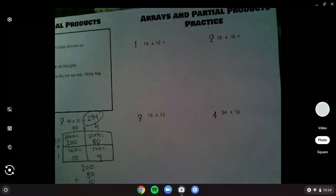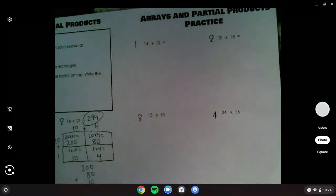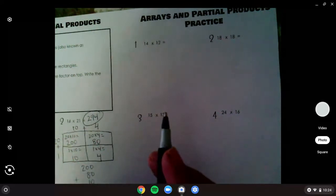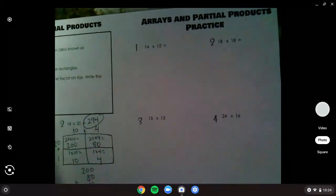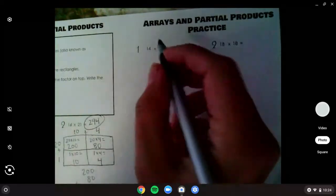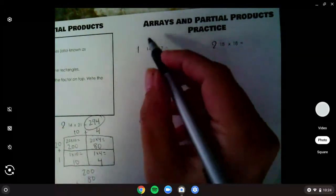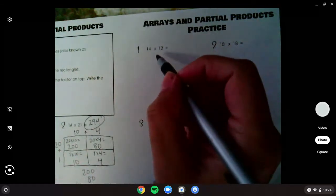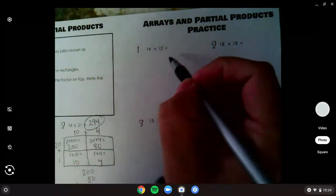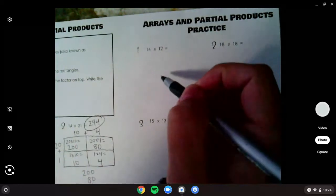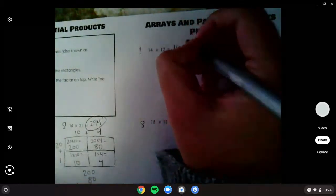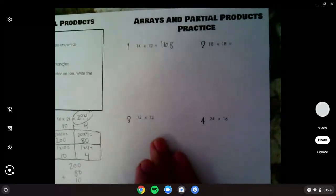Number 1, you should have gotten 14 times 12. And if you expanded it out, you should have gotten 10 times 10, 4 times 10, 10 times 2, and 2 times 4. And you should have added up your partial products to get 168.